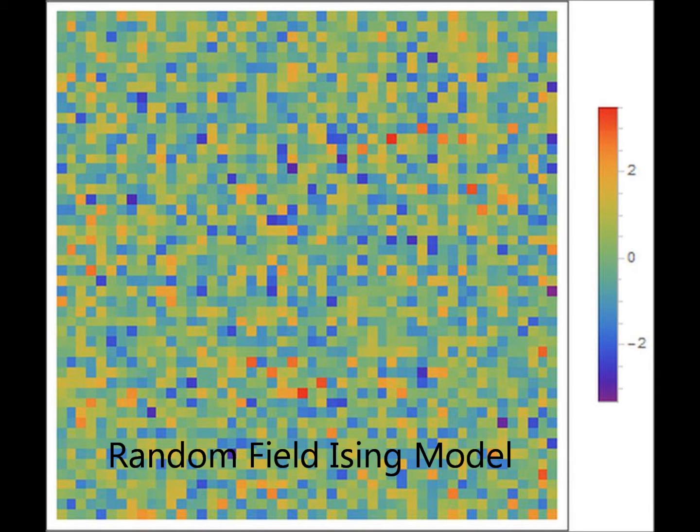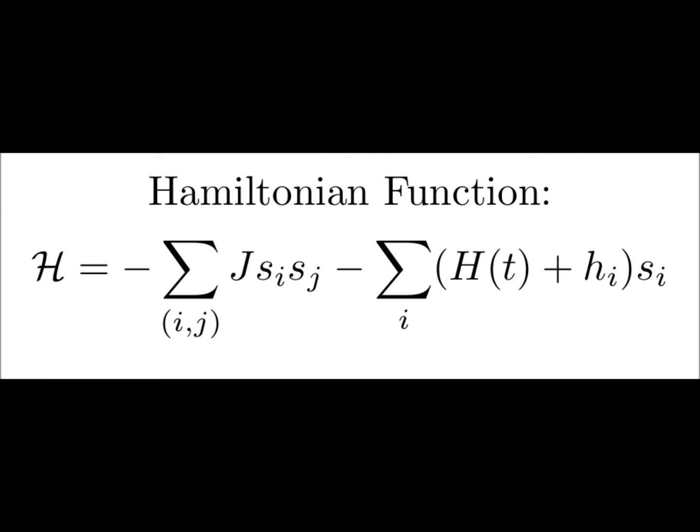This is an image of the magnetic domains for a given simulation of disorder 1. Implementing this type of field in our Hamiltonian, we can simulate the magnetization process as we increase the external field, H.